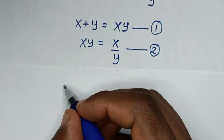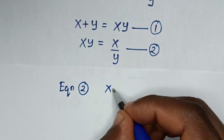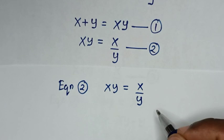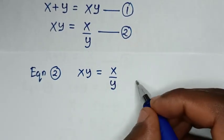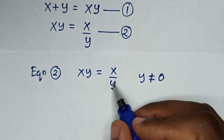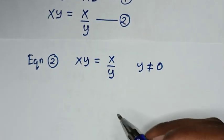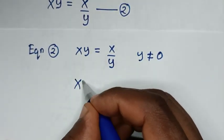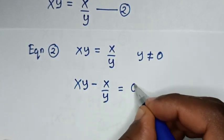Starting from equation 2, which is xy equal to x over y. Because y is in the denominator, we note that y must not equal 0, since the equation would be undefined. We move x over y to the left side, giving xy minus x over y equal to 0.